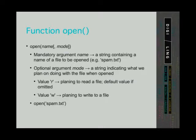The optional argument mode is a string indicating what we plan on doing with the file when we open it. We can put value R if we want to read a file, or we can put value W if we want to write to a file. If the argument mode is left out, the program assumes that the default value is R. This function has another optional argument that we won't be covering in this lesson.